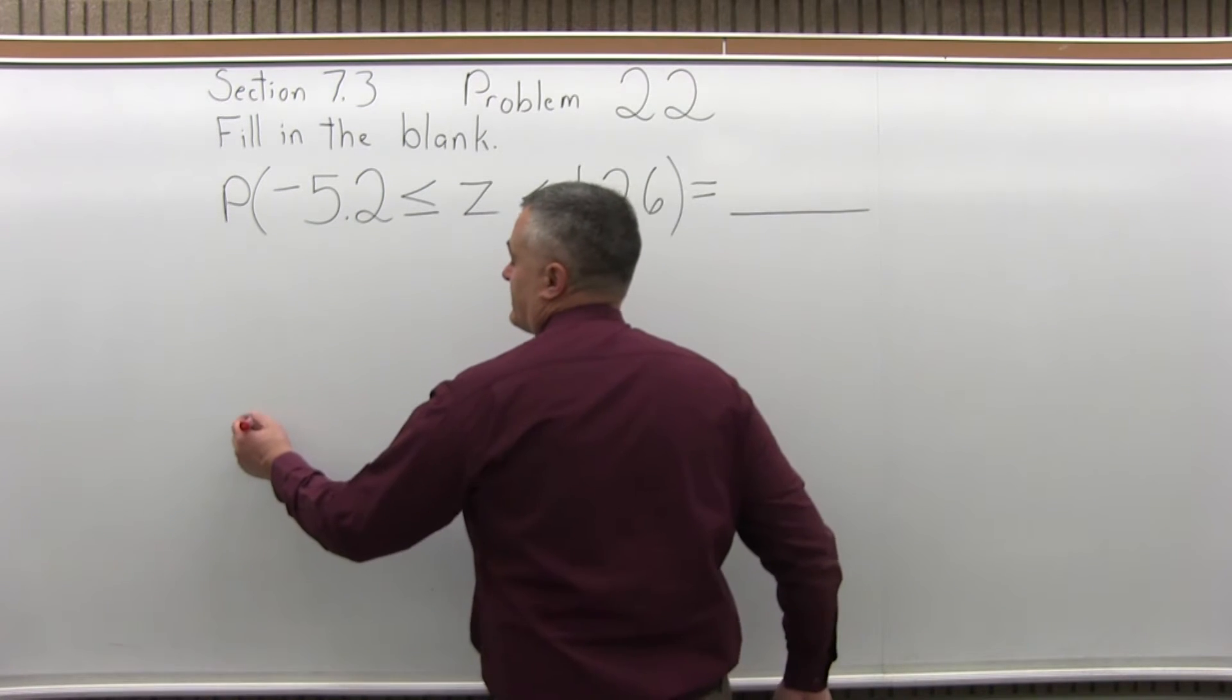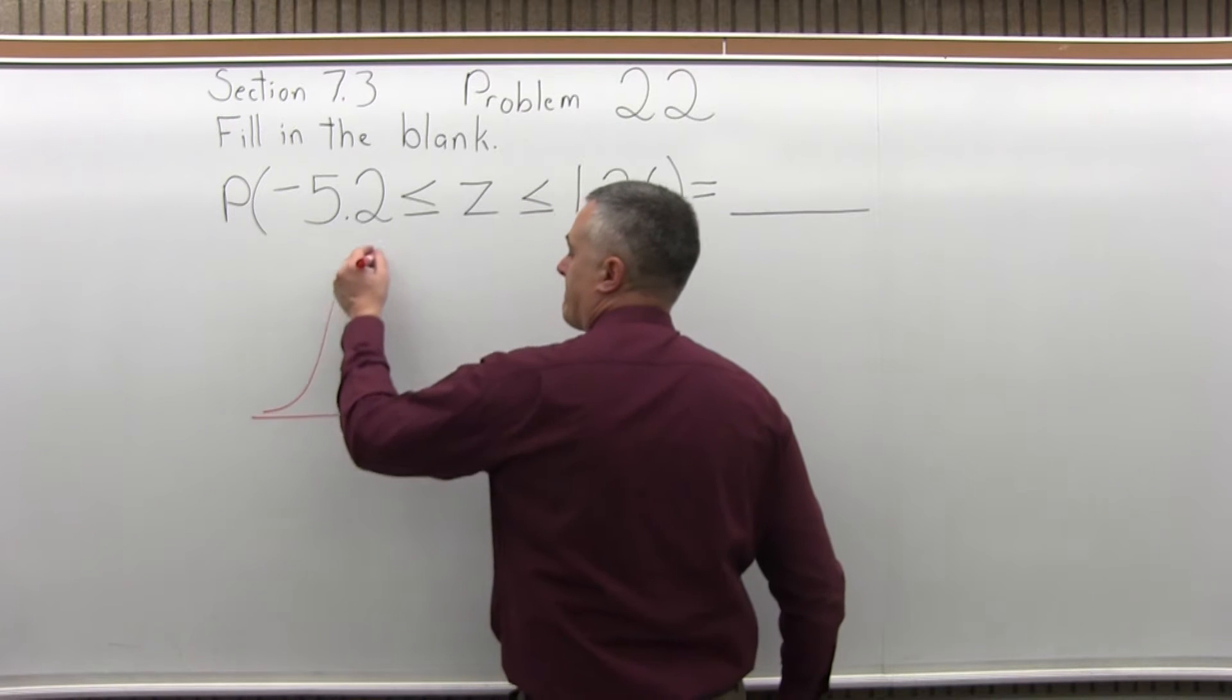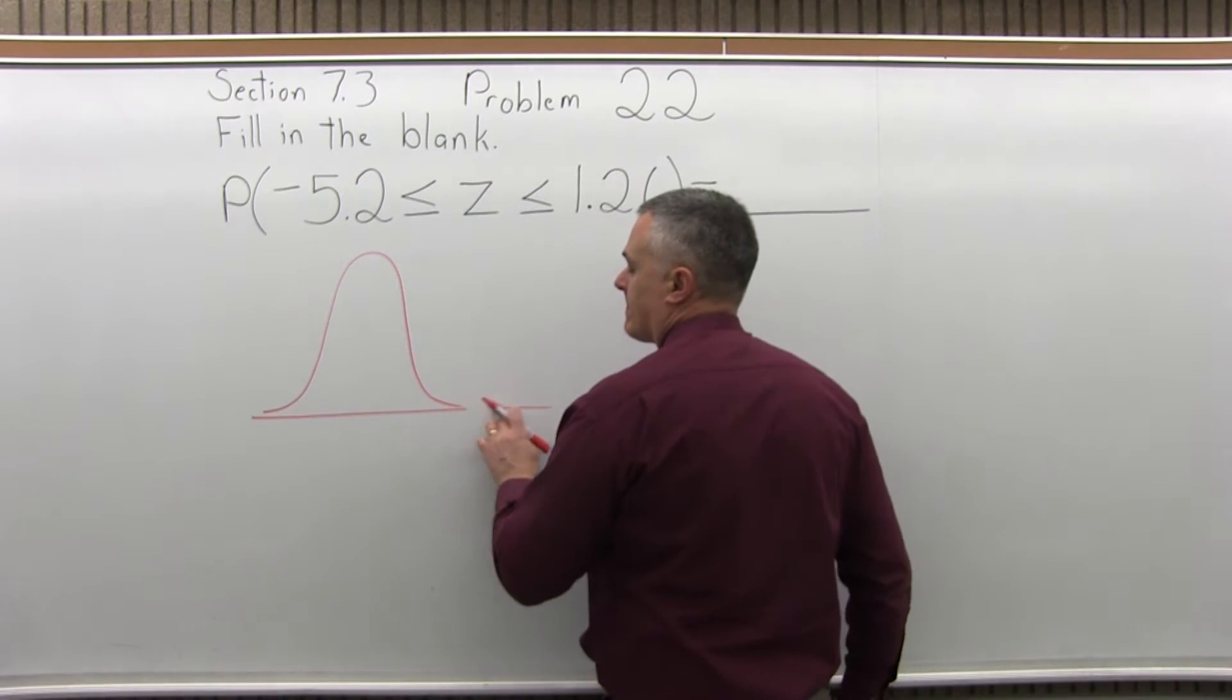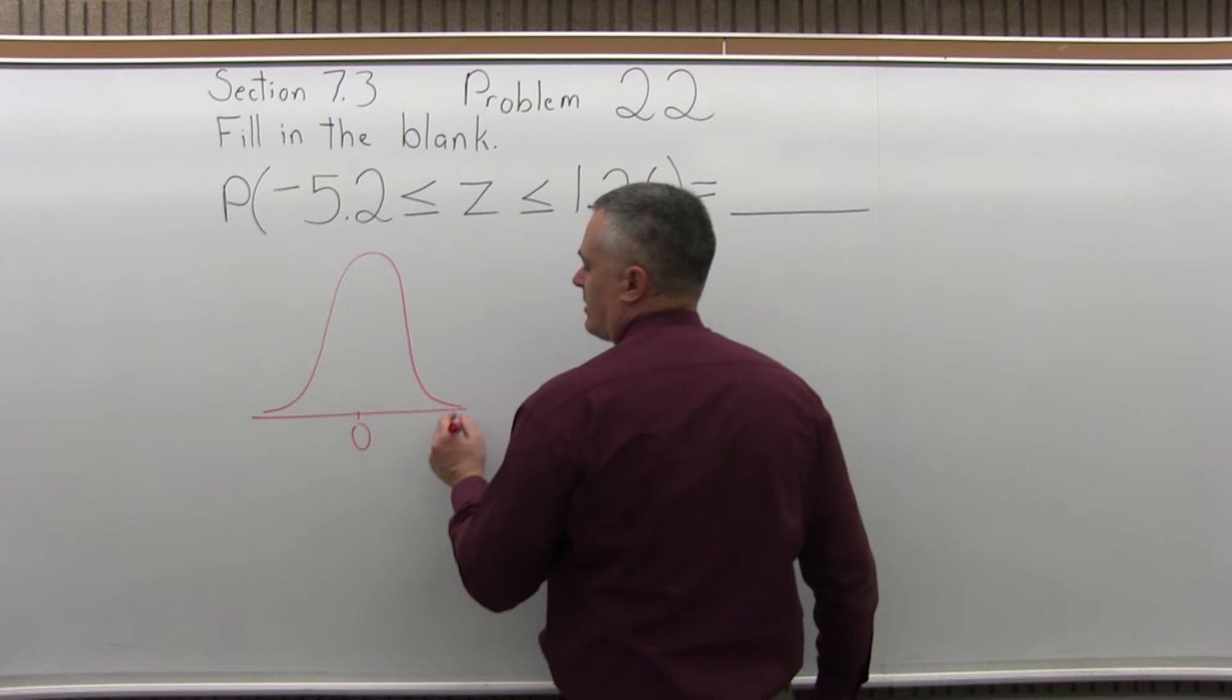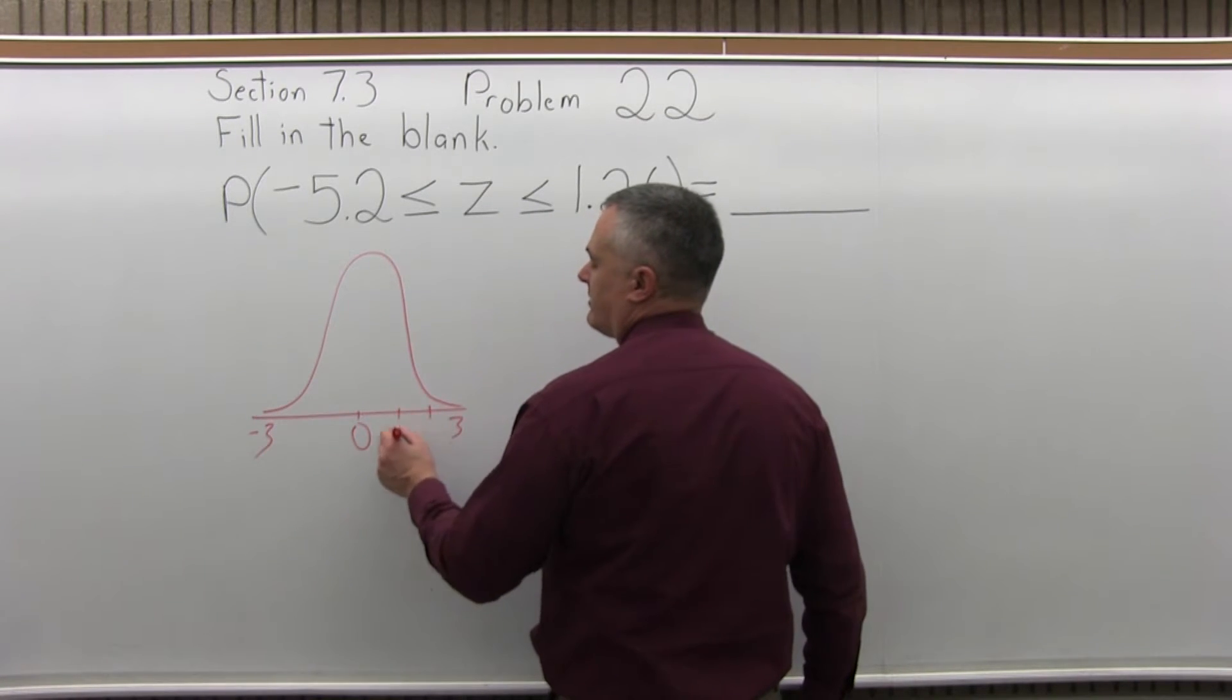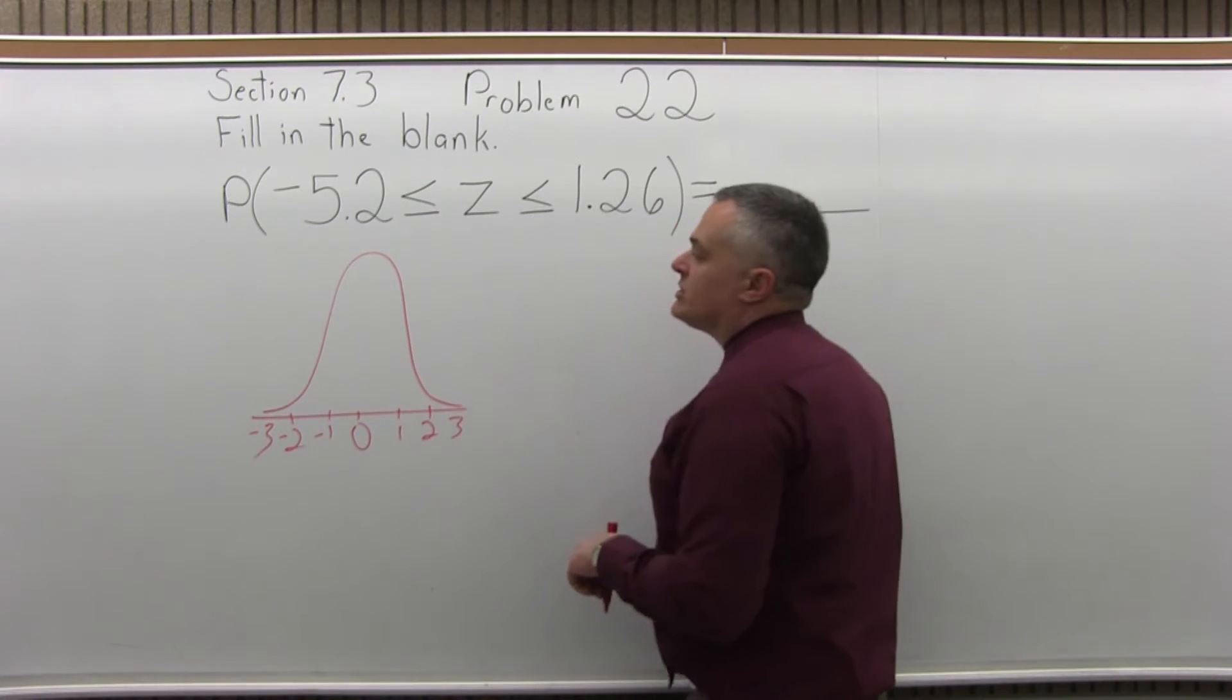In all these I think it helps if you see the picture. So I'll draw a bell curve, 0 in the middle, 3 on one end, negative 3 on the other end, 1, 2, 3, negative 1, negative 2, negative 3.